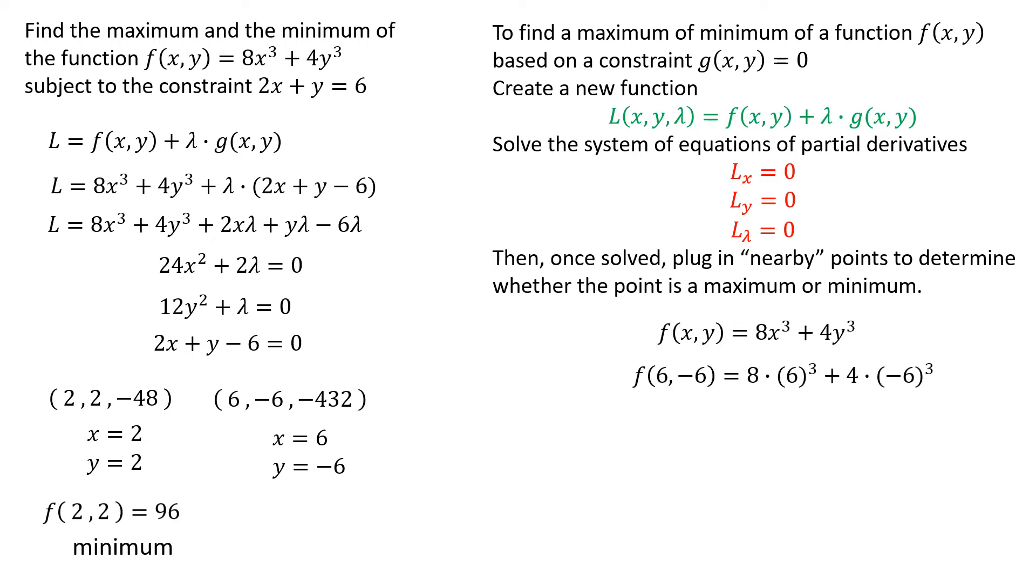I'll do the same for the point (6, -6). I plugged (6, -6) into the function and I got a value of 864. This is more than likely going to be a maximum since it's so much higher than the 96 at the other point, but just to be sure, I found points near (6, -6) to see what would happen. When I found a point near the constraint equation that worked, I got (6.1, -6.2).